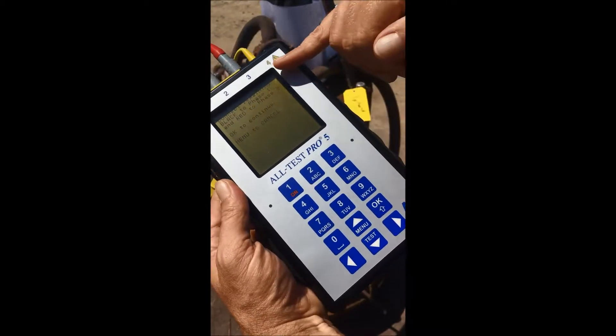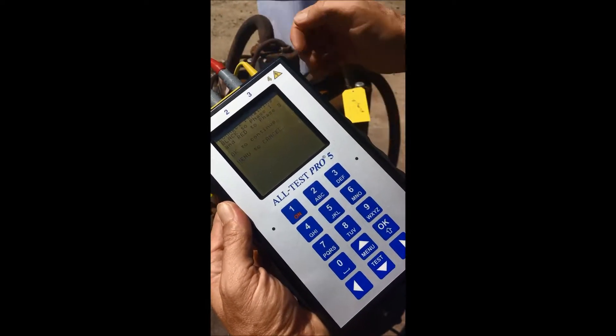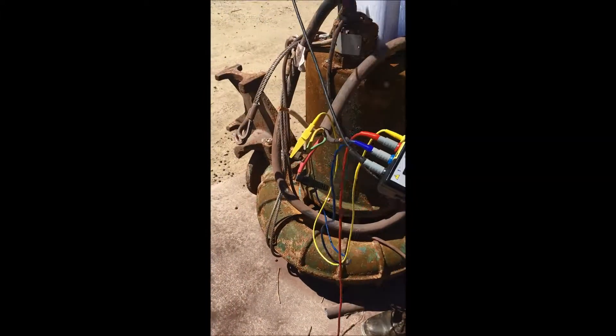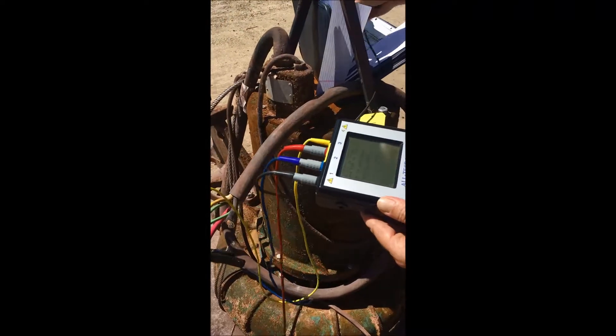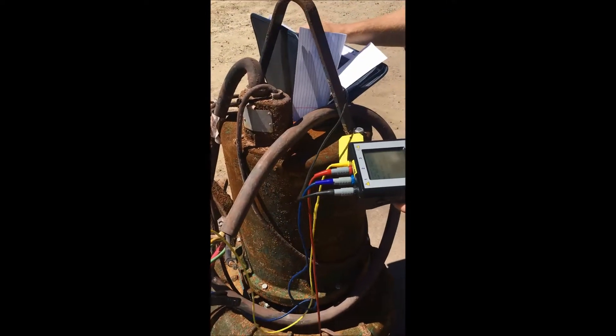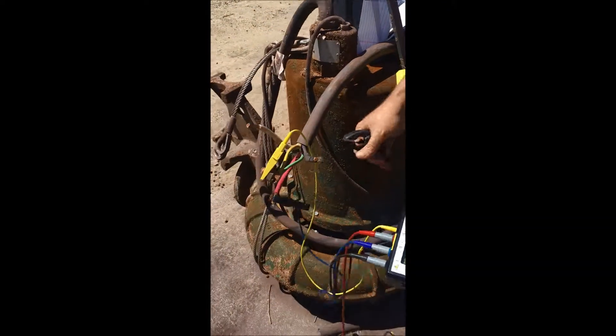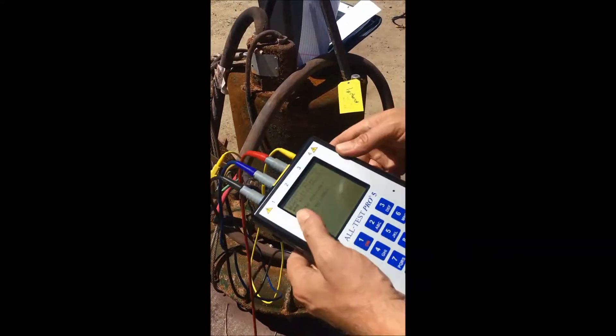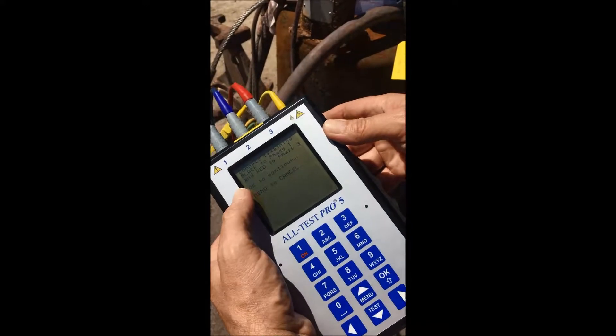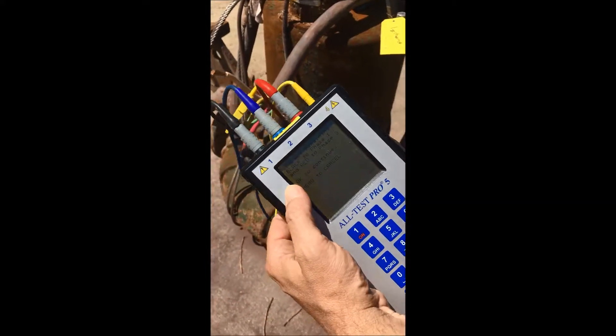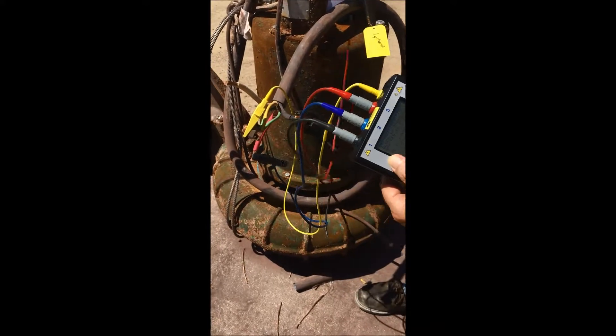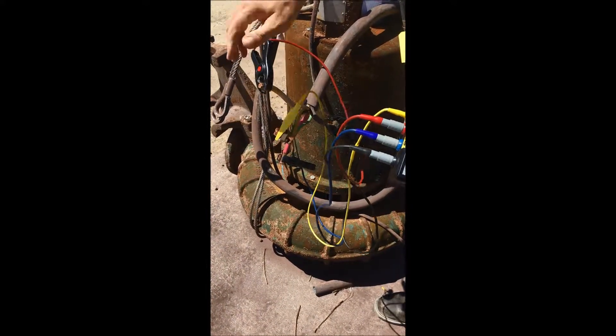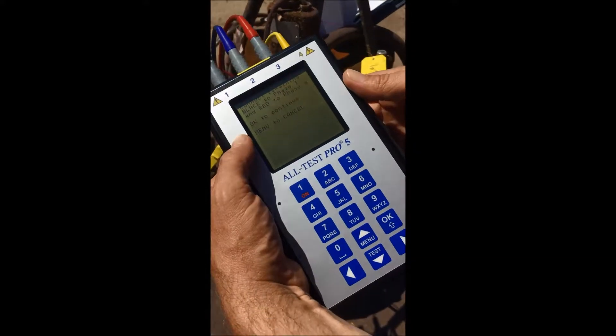It is walking us through. Connect black to one. I'm going to go to my leads now. Black to phase one. And based on our wiring diagram, phase one is black. Make sure we have a good bite. It tells us next, connect red to phase three. So I'm going to grab my red lead. Phase three is white. Make sure we have a good bite. And now the AT5 tells us hit OK to continue.